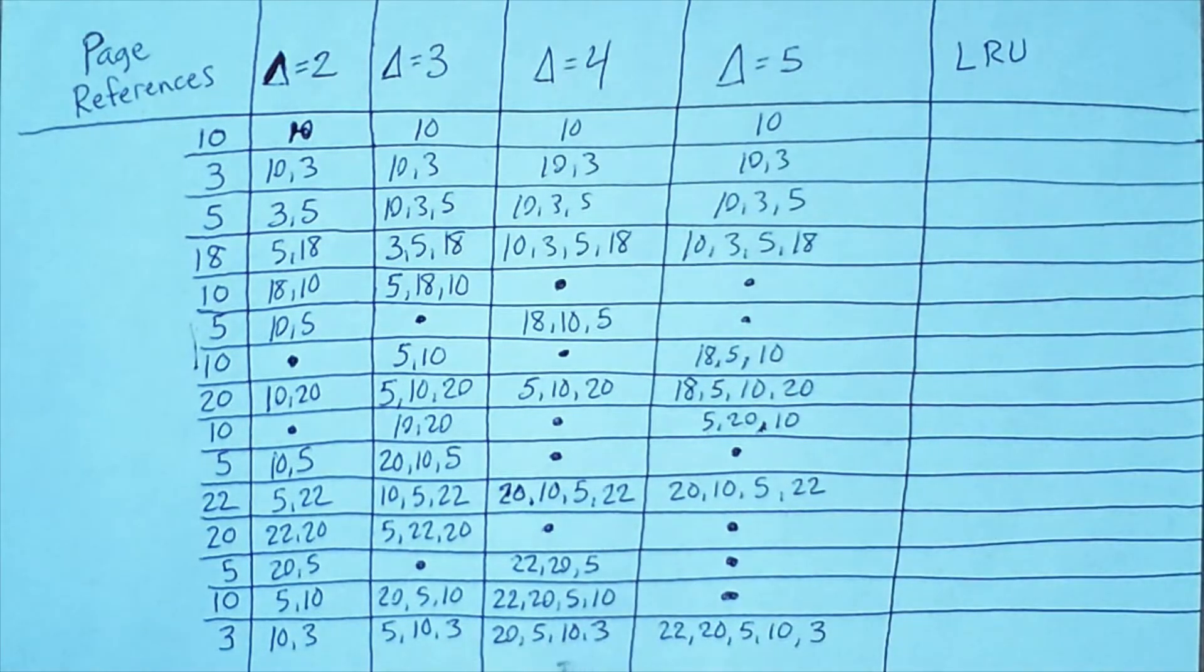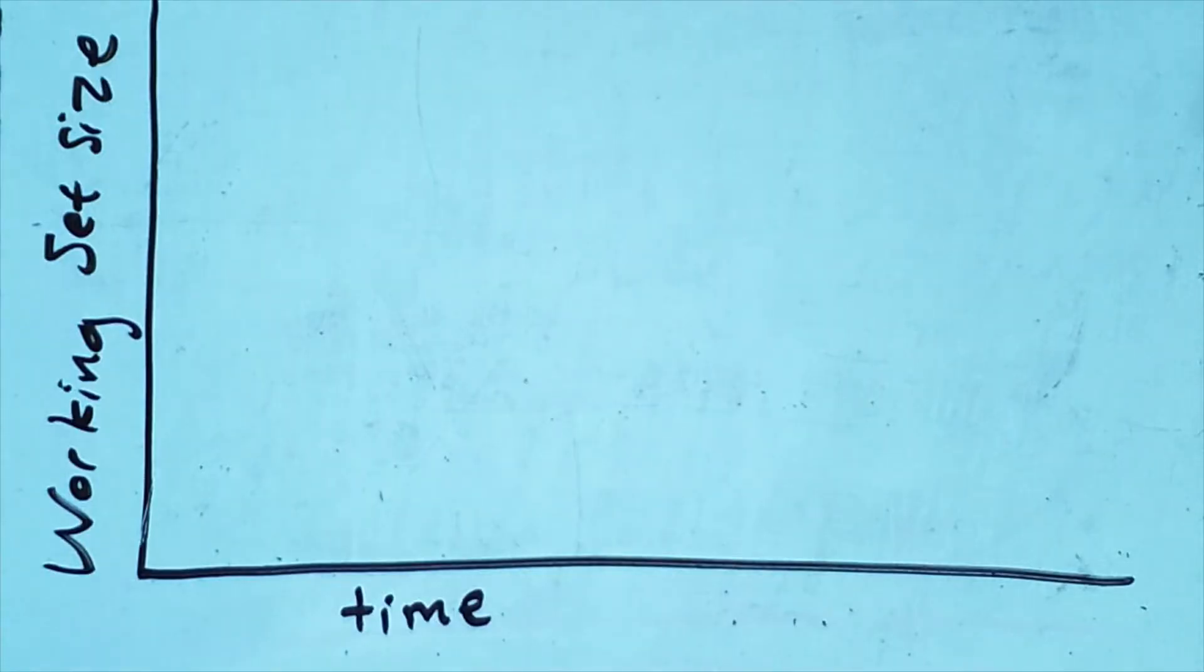And then the last two entries are going to be different from each other. And at this point we can fill out columns for delta equals 4 and delta equals 5 using the same procedure. Here is the result, and you'll see that as delta increases.